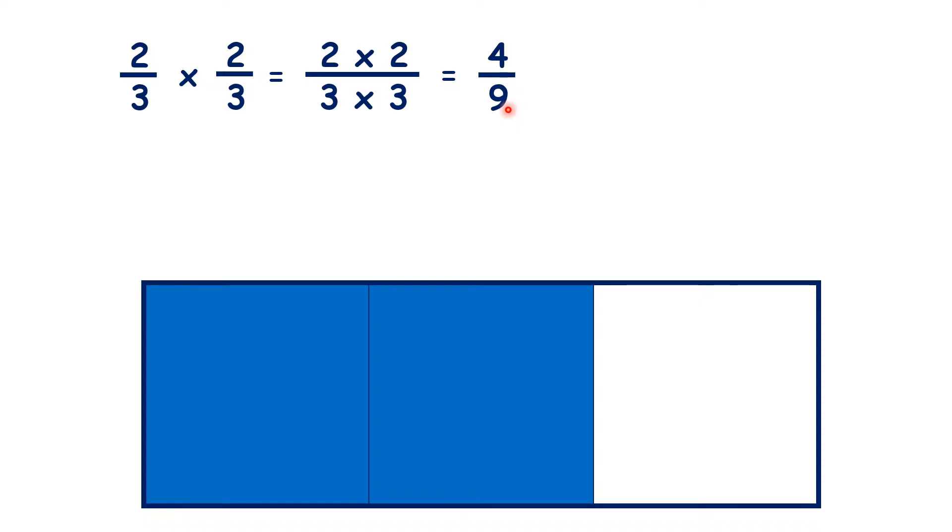And the reason why we do that is because with fractions, times and of mean the same thing, so if we have two-thirds times two-thirds, we're really finding two-thirds of two-thirds.